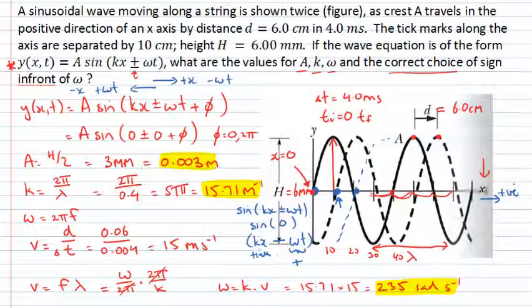So my mathematical function y of x and t, which describes this wave, can be written as 0.003, my amplitude, times the sine of k times x, which is 15.71 times x, minus omega 235 times t.